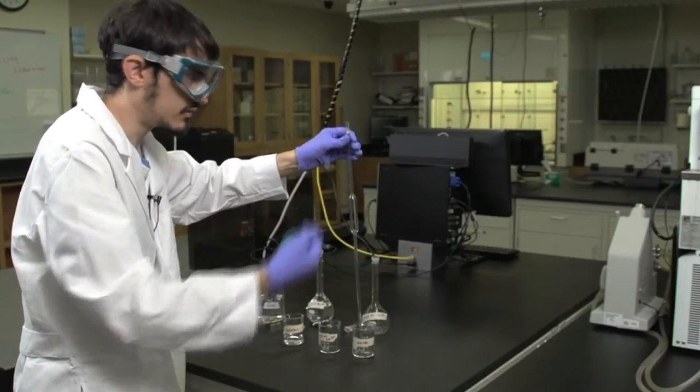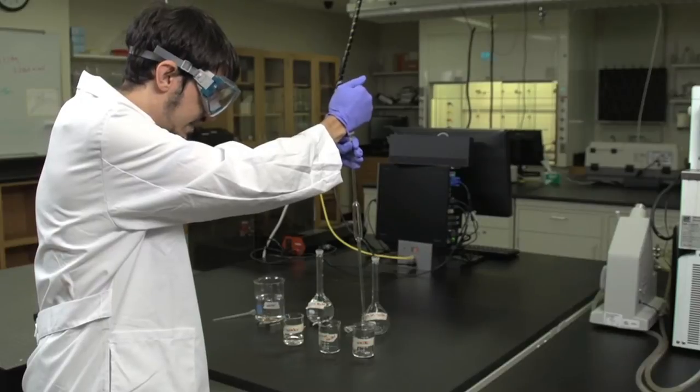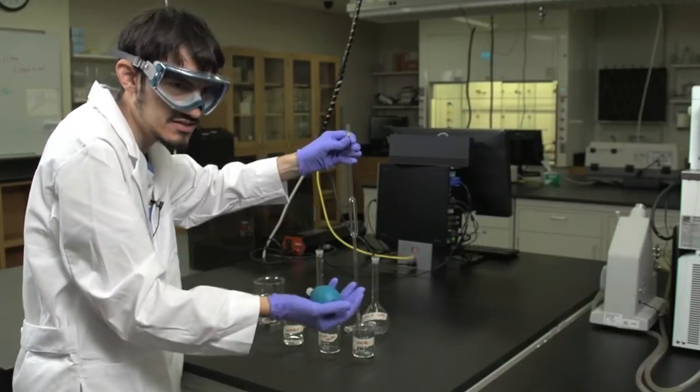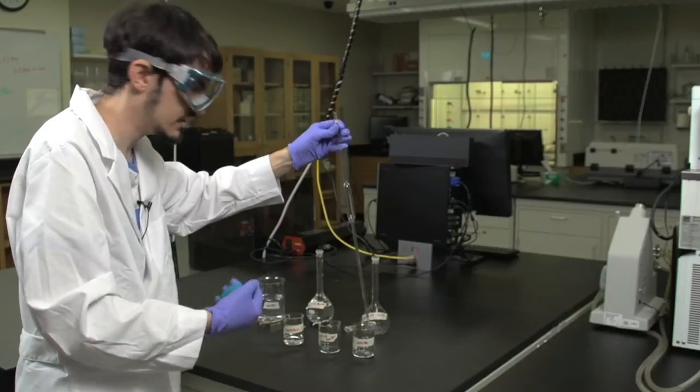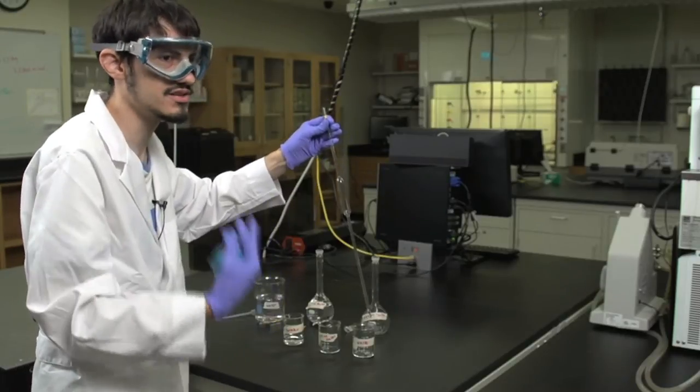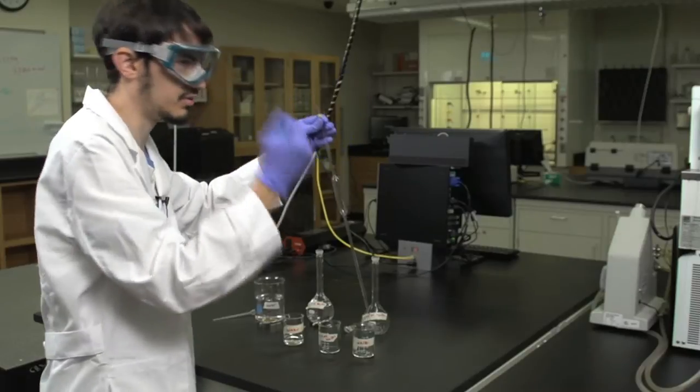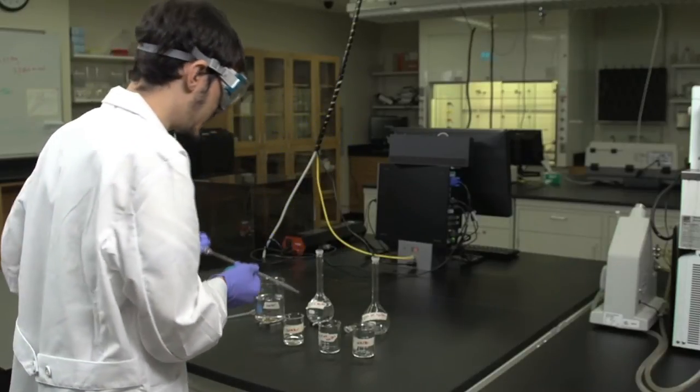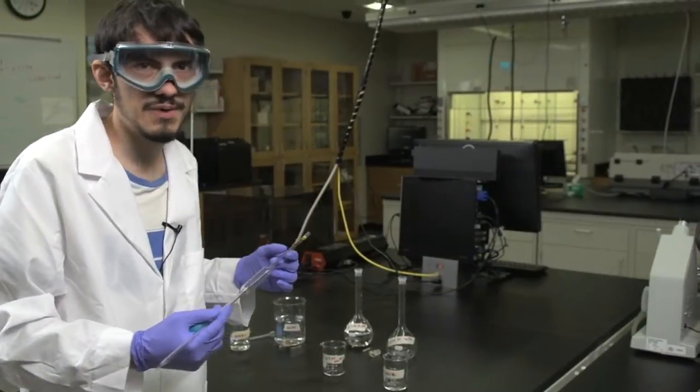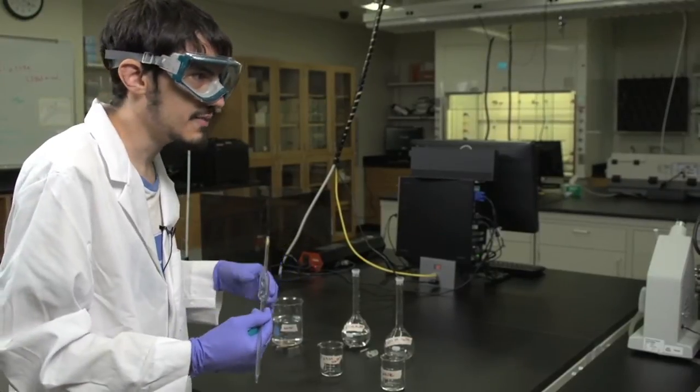Allow the water to drip out into a waste container. You can also blow out the remainder in this case, but do not do this when you are making an actual solution, as the pipettes are calibrated to deliver the amount of volume without having to blow out the remainder. Once you have rinsed the pipette with water, you are now ready to make the solution.